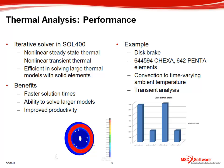Here is an example of a disc brake model that has close to 650,000 C-hexa elements and also some penta elements as well. In this model, we have convection to time-varying ambient temperatures and the convection coefficient is a function of temperature.